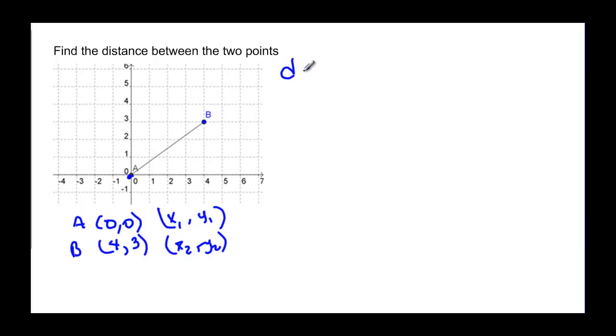So d is equal to the square root of the difference of my x's squared plus the difference of my y's squared. My x1 would be 0 and x2 is 4, and it doesn't even matter which one we start with. We just have to make sure that we're subtracting x's and subtracting y's because when you square, the sign doesn't make any difference.